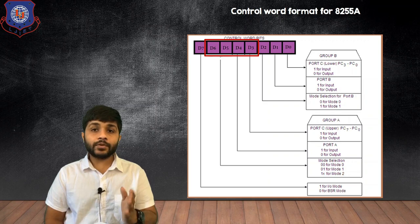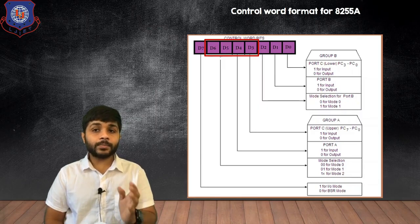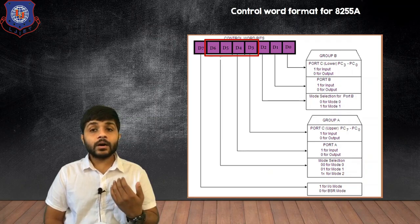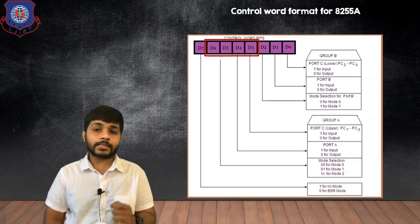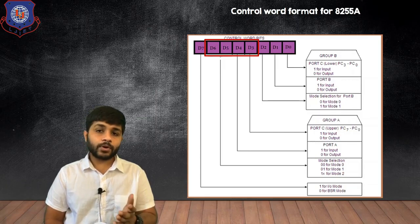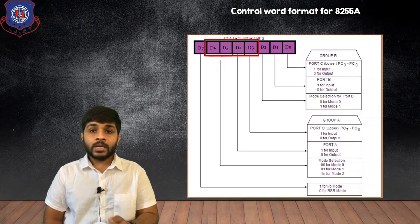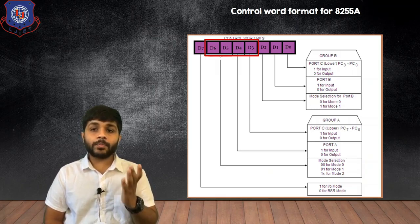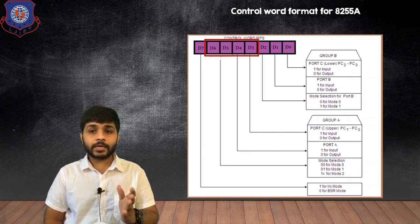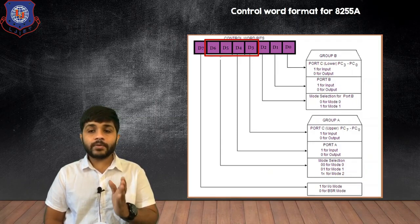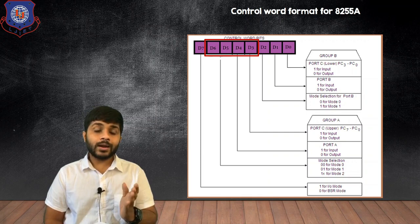The next 4 bits — D3, D4, D5, and D6 — are for Group A. If D3 is 1, Port C upper works as input; if D3 is 0, Port C upper works as output. If D4 is 1, Port A works as input; if D4 is 0, Port A works as output. D5 and D6 are the master bits for Group A and decide which mode the Group A ports will work in. If D6 D5 is 00, Group A works in Mode 0; if it is 01, Group A works in Mode 1; and if D6 is 1 with D5 as don't care (1x), Group A works in Mode 2.